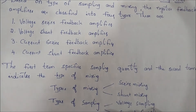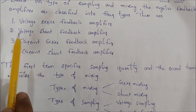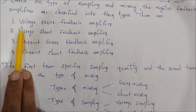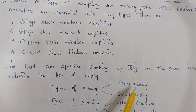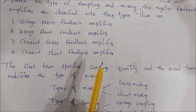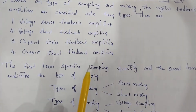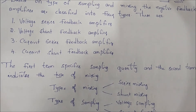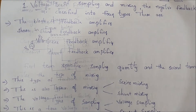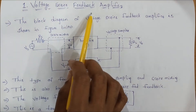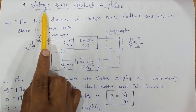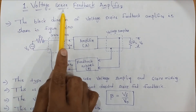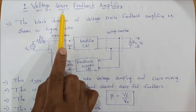In the classification, the first type combines voltage sampling and series mixing. These four types are classified accordingly. Now we will explain the feedback amplifier details. The first one is voltage series feedback amplifier — first term is voltage sampling, second term is series mixing.